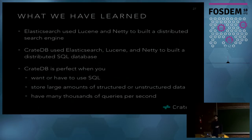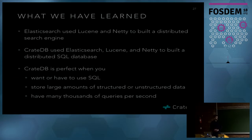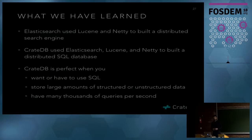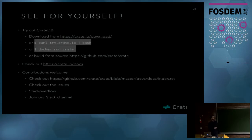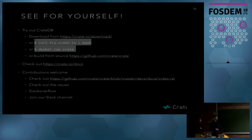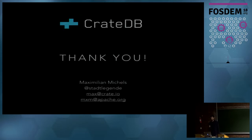The bottom line: Elasticsearch uses Lucene heavily, and we used Elasticsearch, Lucene, and other tools to build a distributed SQL database on top. CrateDB is really perfect when you want or have to use SQL and need to store a large amount of structured or unstructured data with many thousands of queries per second. I'd invite you to try it — download it from the website, use the curl command, or do 'docker run crate'. Check out the docs, contribute on GitHub, ask questions on Stack Overflow, and we have a Slack channel too. Thank you very much.